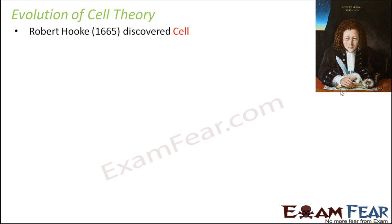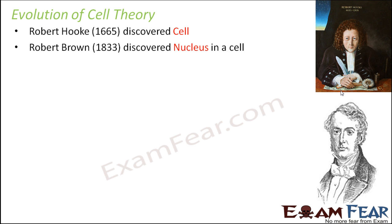As time passed there was another scientist, Robert Brown, somewhere around 1833. The cell was discovered in 1665, but Robert Brown discovered the nucleus around 1833 — a huge time gap in between. That's because the equipment was not there; if you don't have the equipment, you will not be able to discover anything. So Robert Brown discovered the nucleus in a cell.